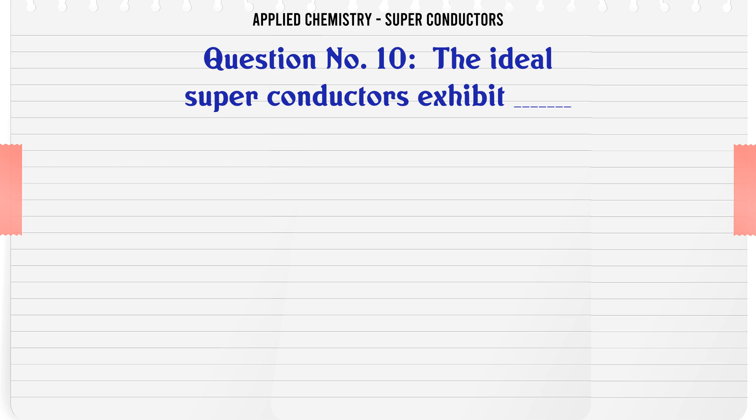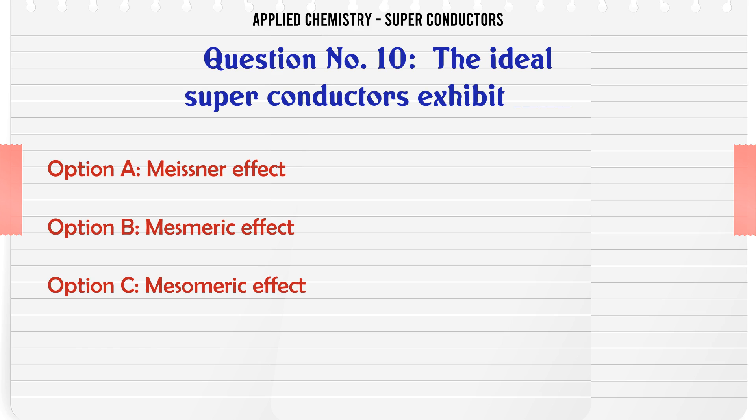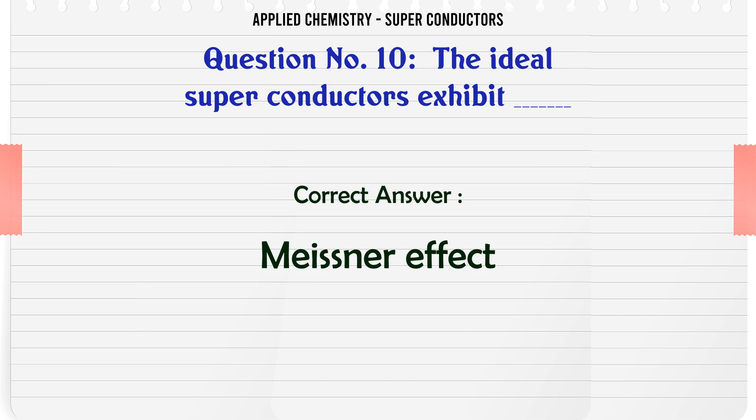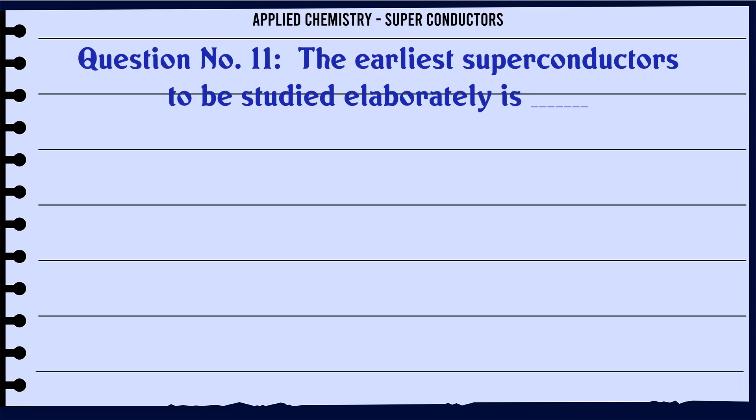The ideal superconductors exhibit: A Meissner effect, B mesmeric effect, C mesmeric effect, D monomeric effect. The correct answer is Meissner effect.